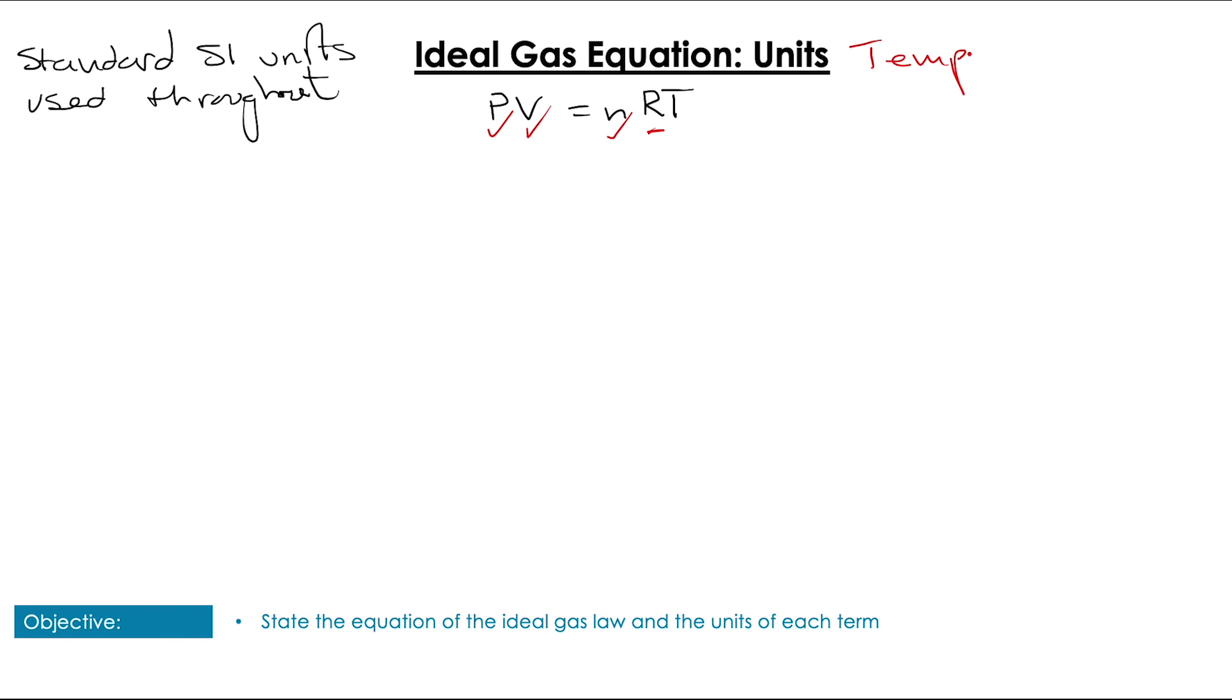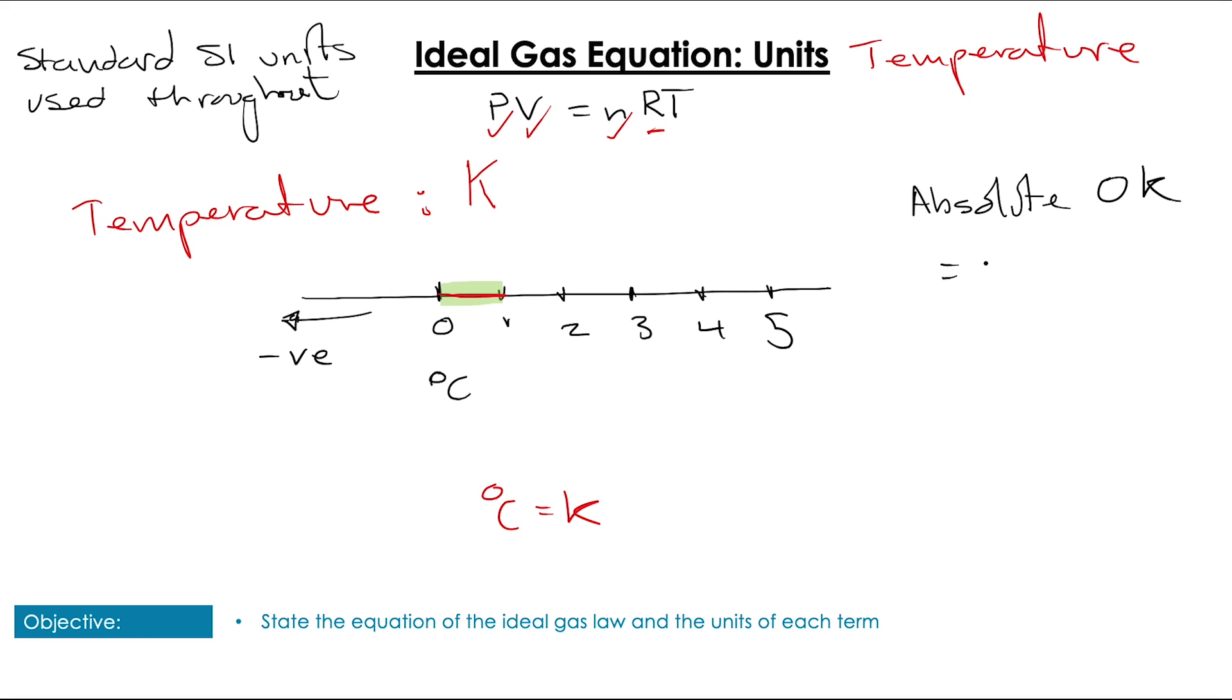And with pressure, volume, number of moles, and R done, temperature is last. Temperature's SI unit is Kelvin, and degrees and Kelvin do not differ in their increment, only in their beginning. Degrees have a negative value, but the difference between 1 and 0 is equal for both degrees and Kelvin. It's just the absolute 0, given in Kelvin, is minus 273.15. Just minus 273 will be fine for the IB. The point being is the increment is the same, only the start point. So all you have to do to convert from degrees to Kelvin is add 273, and to convert from Kelvin to degrees is take away 273. For example, 2 degrees is 275 Kelvin.